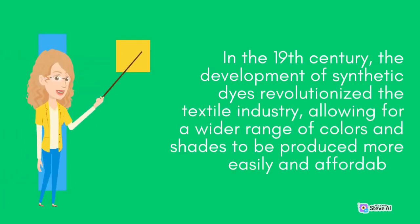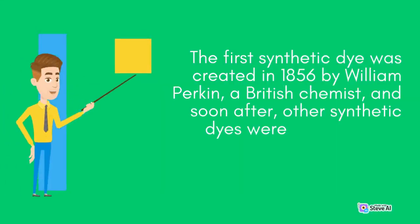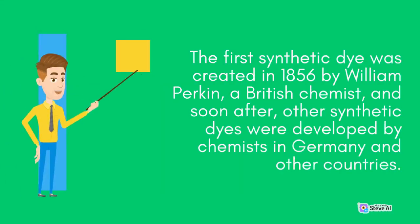In the 19th century, the development of synthetic dyes revolutionized the textile industry, allowing for a wider range of colors and shades to be produced more easily and affordably. The first synthetic dye was created in 1856 by William Perkin, a British chemist, and soon after, other synthetic dyes were developed by chemists in Germany and other countries.